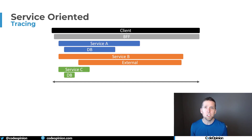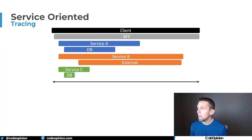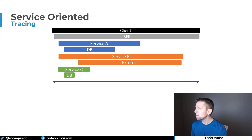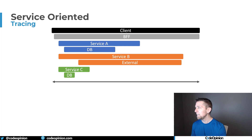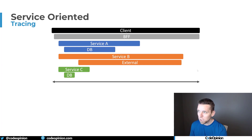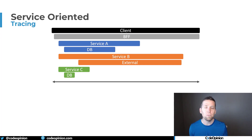In this case, distributed tracing is great because it gives us visualization to see when requests are made to each service and what they're doing — we can see potential bottlenecks. The client requests the BFF, which can call each service concurrently: service A queries its database, service B does something external, and service C gets data from its database — all at the same time. The total time is just as long as the slowest one, service B, before composing everything and returning to the client. This is exactly distributed tracing's intended purpose.